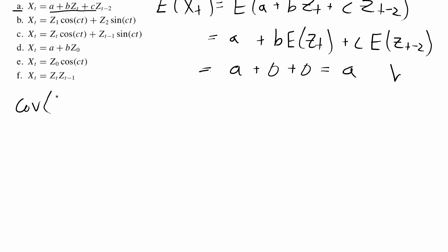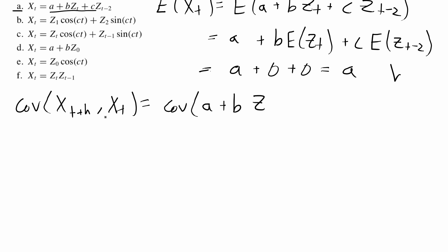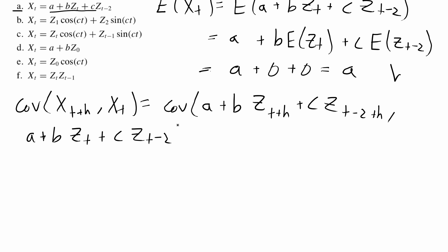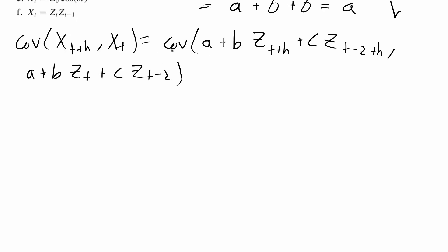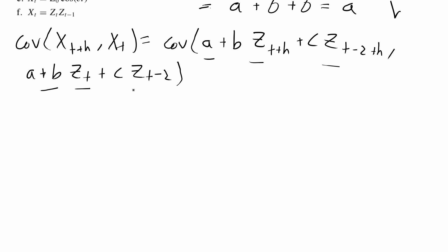For the second part, I'm going to check the covariance between x_{t+h} and x_t by plugging in the right-hand sides. That gives the autocovariance between a plus b*z_{t+h} plus c*z_{t-2+h} and a plus b*z_t plus c*z_{t-2}. I'm going to expand this single covariance function by comparing each part of the first expression to each part of the second.